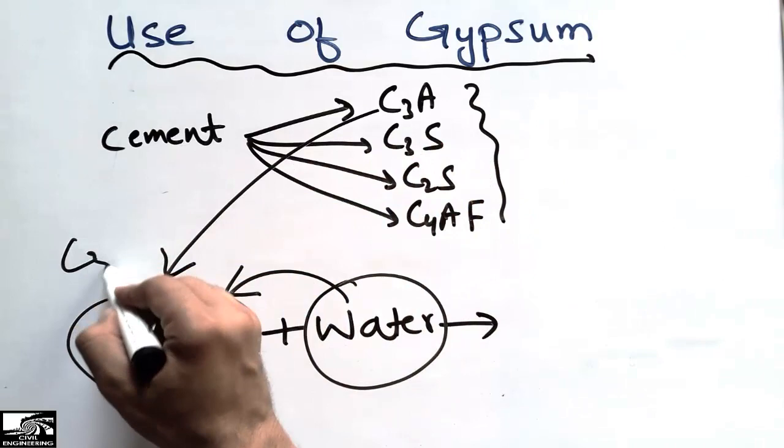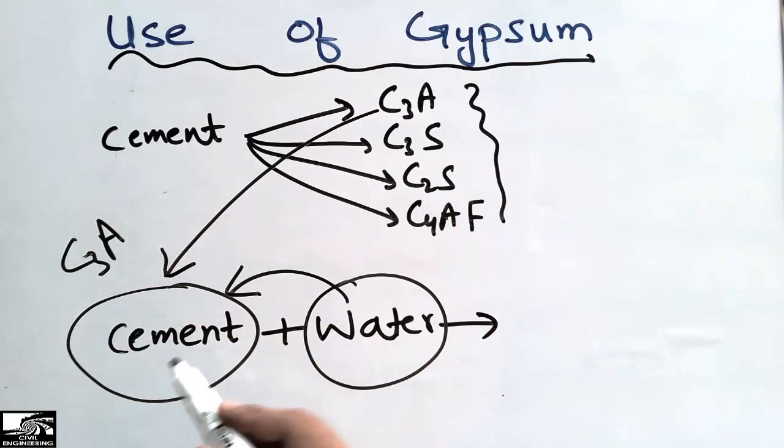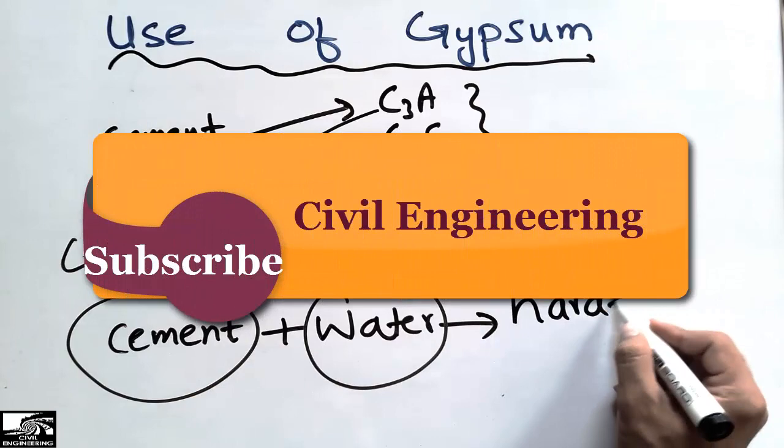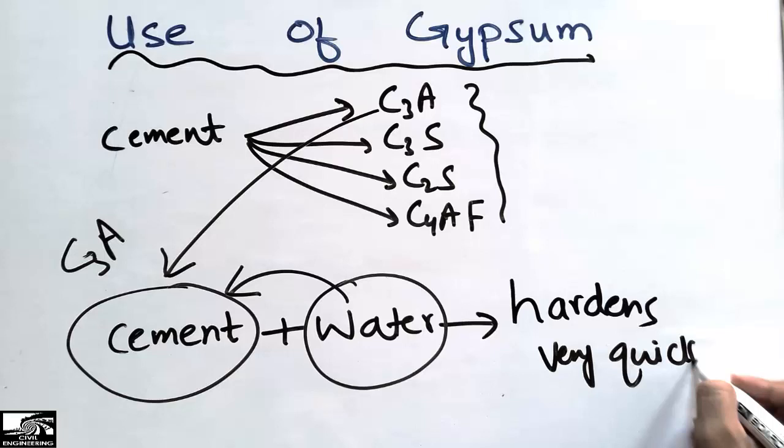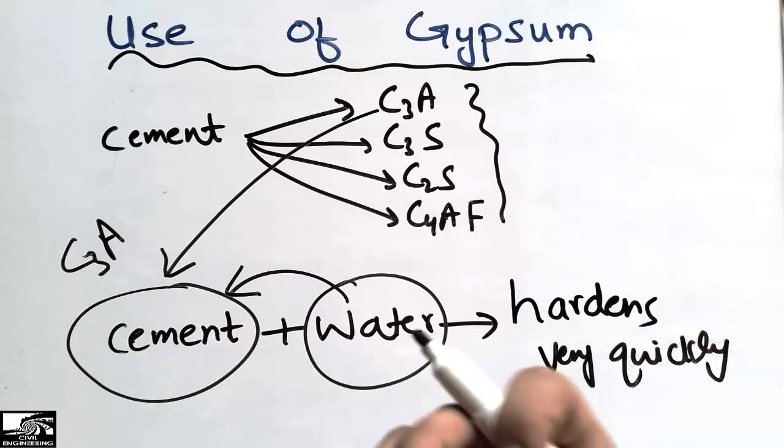This component tricalcium aluminate reacts with water very quickly and it hardens very quickly. The cement becomes hardened really quickly, it doesn't give any time to use the cement.